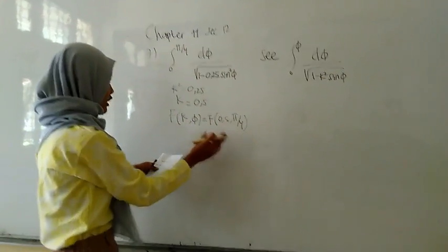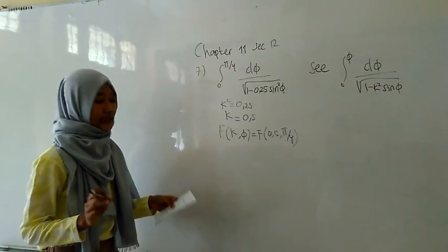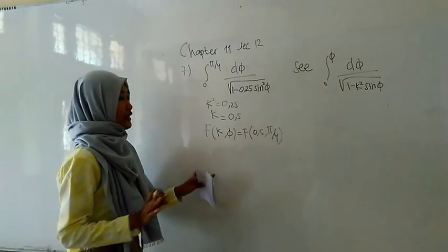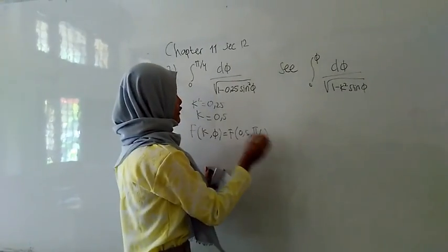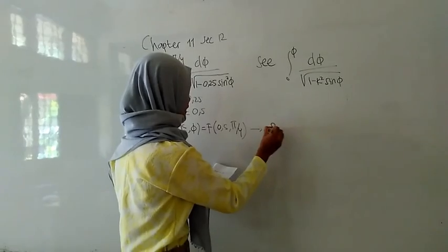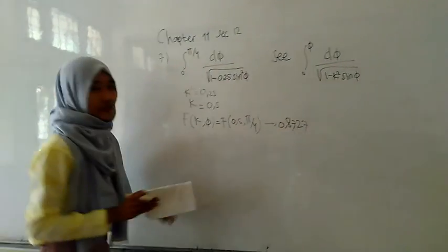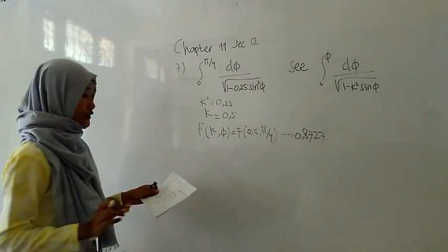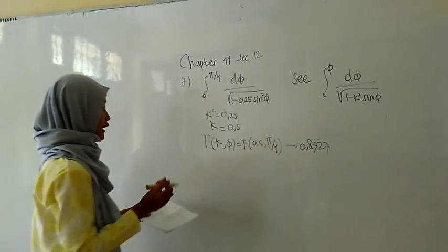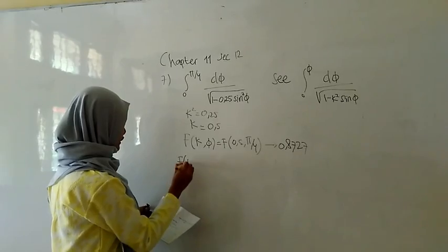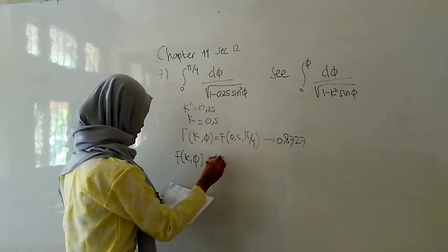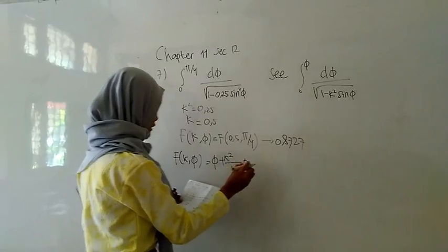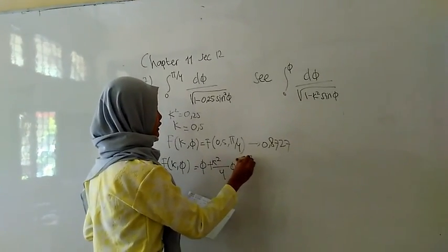We can find the value using the table of incomplete elliptic integrals of the first kind. When we look at the table, the value is 0.8707. So if you don't have a table, we can find it from the series description of the stationary form of the elliptic integral F(K, C), in order of C, then K squared.